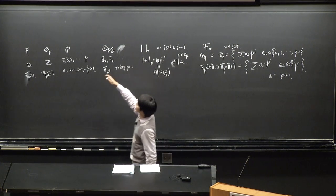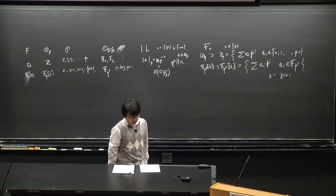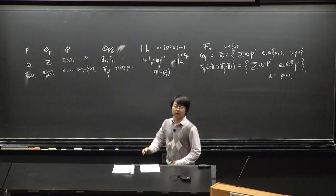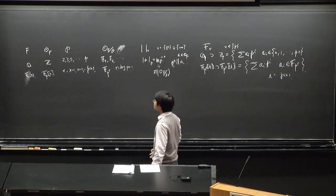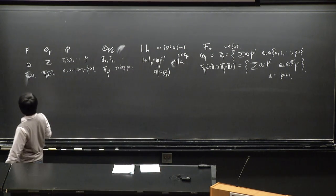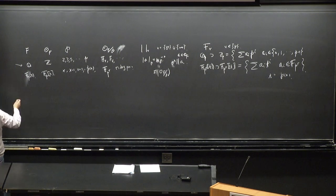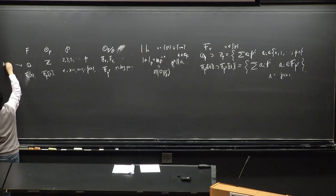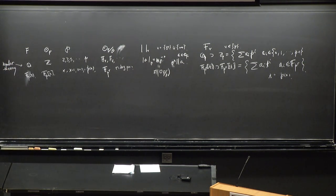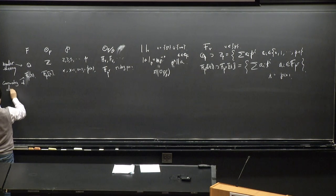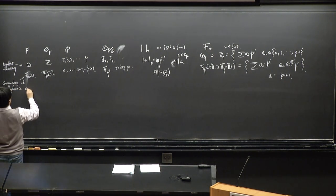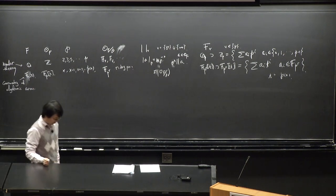Because of this analogy, there are a lot of questions you can formulate for both kinds of fields. The number field side is really related to number theory, while the function field side in one variable is related to the geometry of algebraic curves.